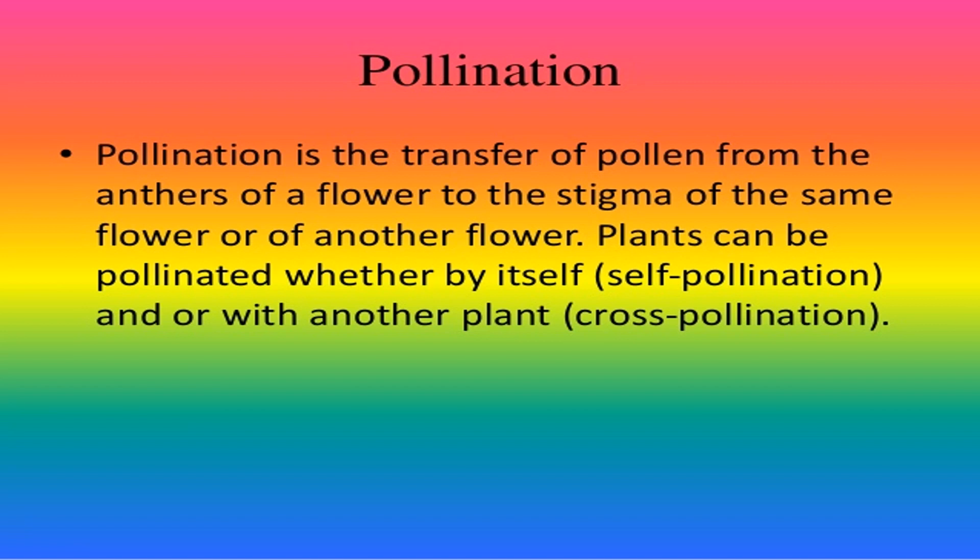First of all, what is pollination? Pollination is a process in which there is the transfer of pollen grains from the anther of a flower to the stigma of the flower. In simple terms, pollination is a process in which the pollen grains are transferred from the anther of a flower to the stigma of the flower — moving from the anthers and reaching towards the stigma of the flower.